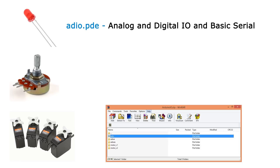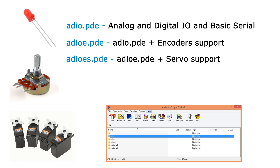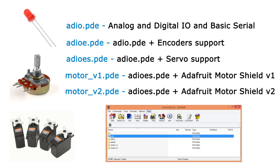The first sketch enables analog and digital input output and basic serial communication. The second sketch includes what the first one does plus encoder support. The fourth and fifth sketches include what the previous sketches do plus support for Adafruit motor shield versions 1 and 2.